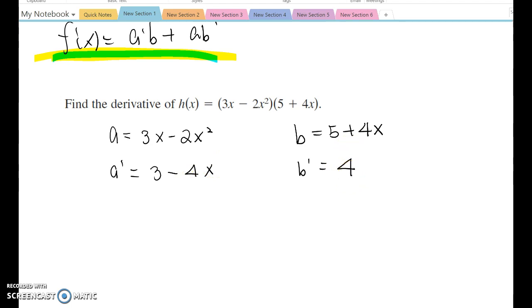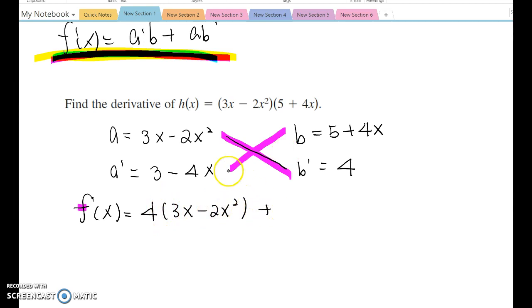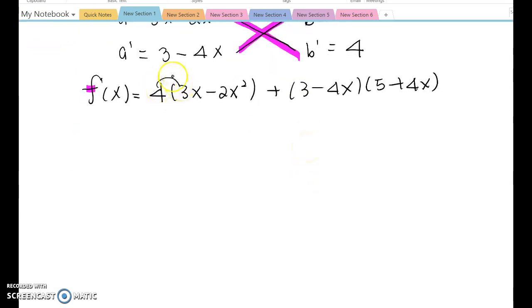Now you cross multiply and you will complete this form. So f prime x equals—I'm going in this direction first—4 times 3x minus 2x squared, plus this direction, 3 minus 4x times 5 plus 4x. So you foil them out, then 12x minus 8x squared plus...